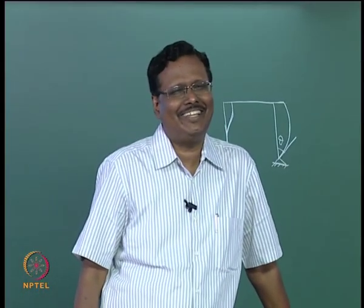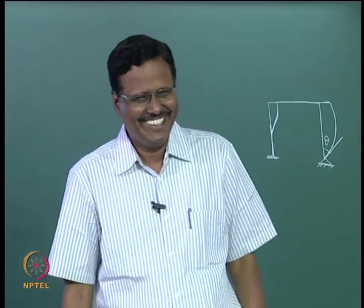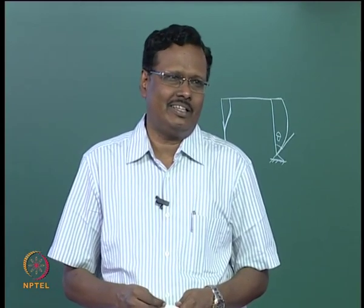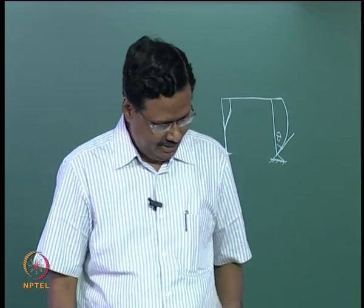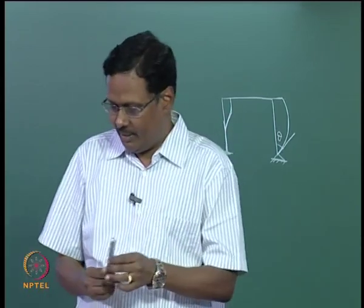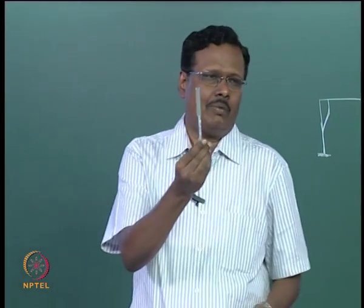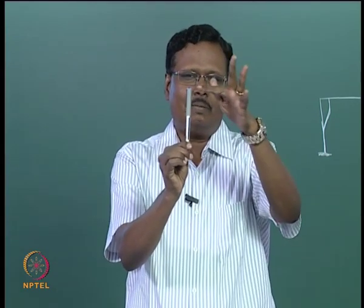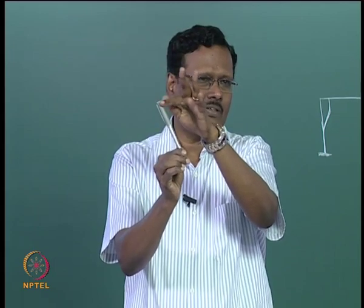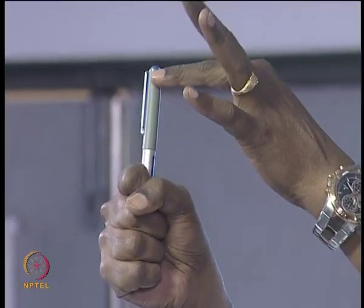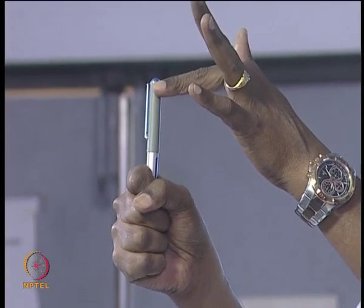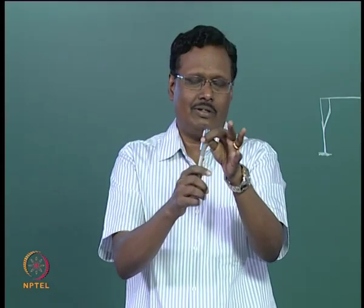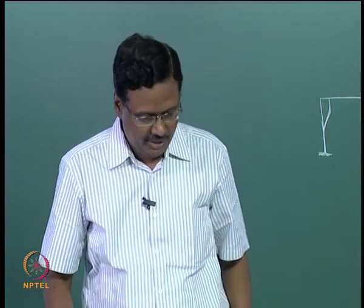Three times the diameter means the structure will fail — unless it is rock. If the embedment depth is very small and a lateral load is applied, the pile will topple. But if it is held more firmly and a force is applied, the pile may bend but will not fall. So three diameters of embedment is not sufficient in most cases.